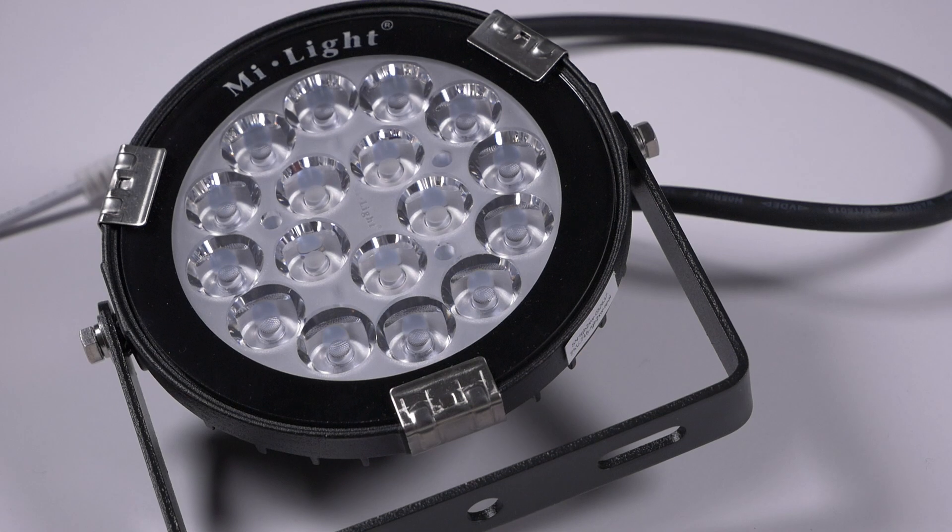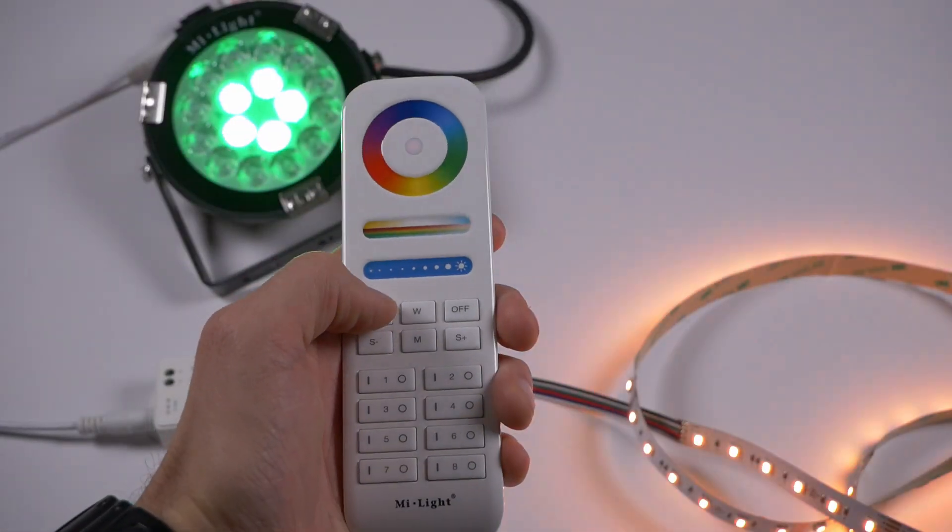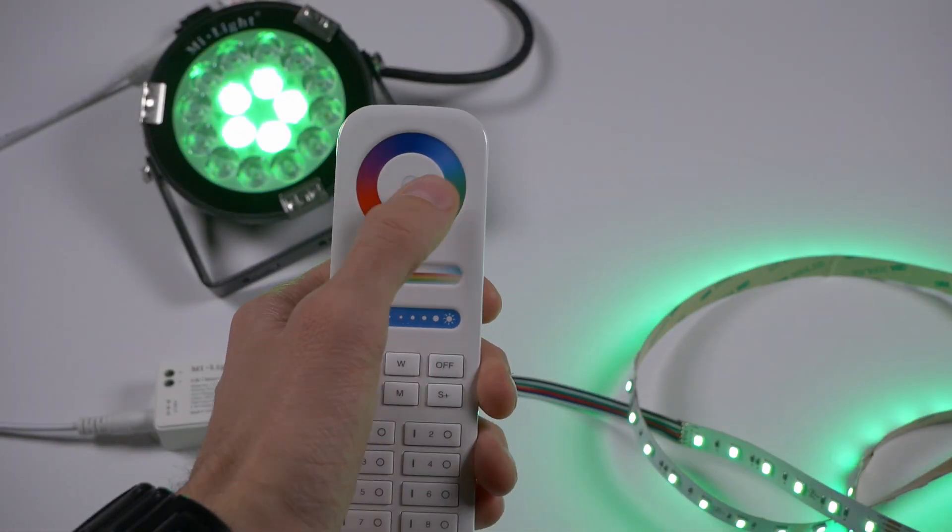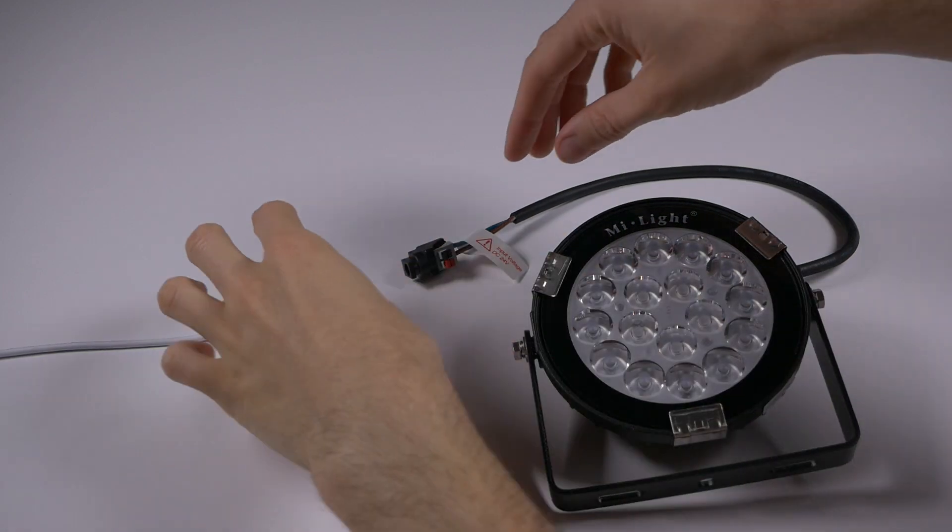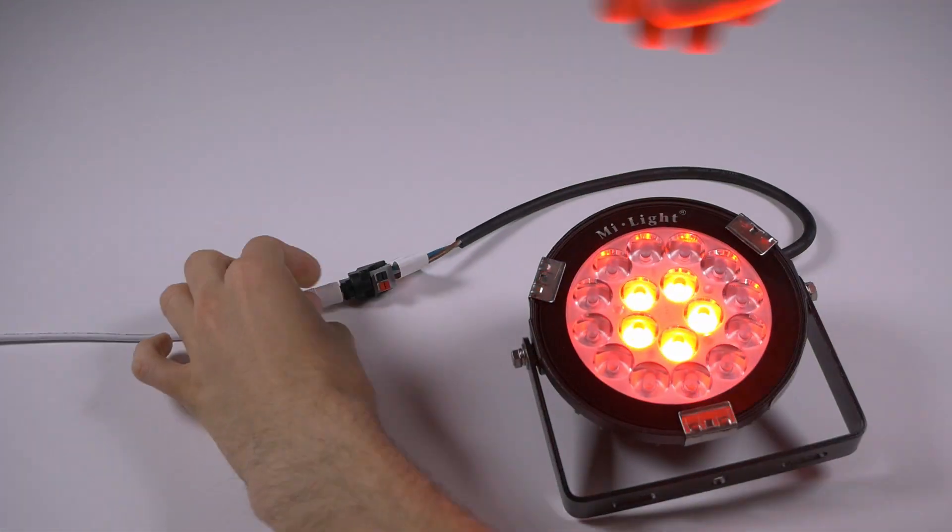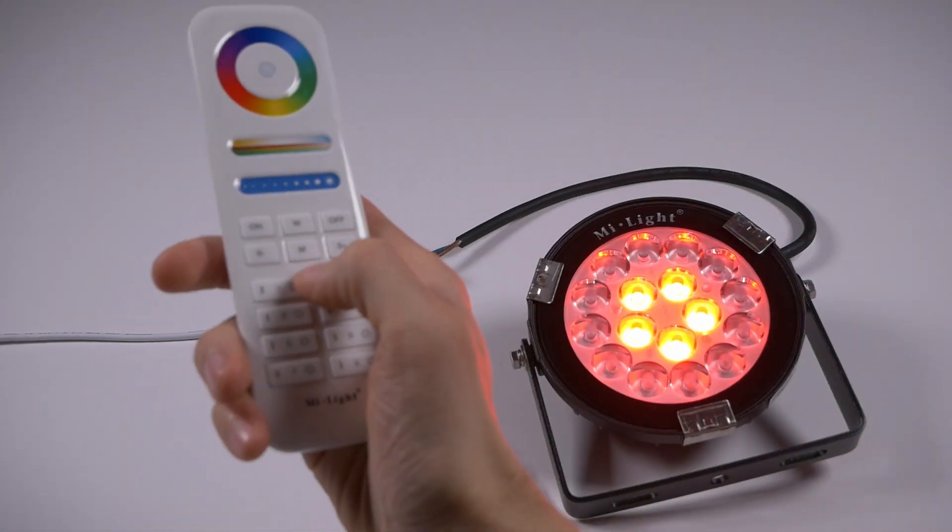MyLite even makes RGBWW garden lights that can be easily controlled together with LED strips using the same remote. They are super easy to use because the receiver is built right into the light. Just pair the light to a zone as you would a receiver.